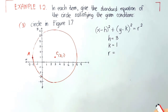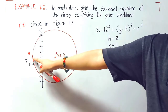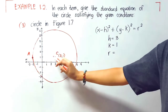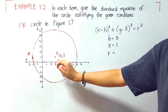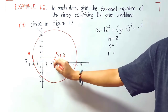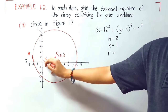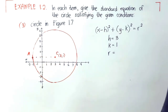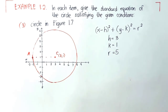Now, to get our radius, we have to consider a point on the circle. We'll get the distance from the center to that point. So we'll count: 1, 2, 3, 4, 5. They are 5 units away, therefore our radius is 5.